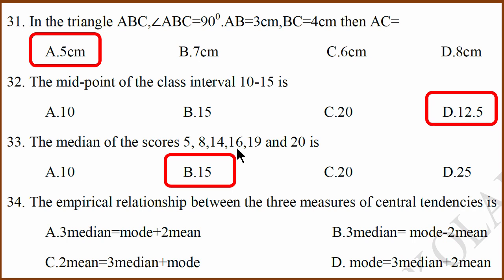Empirical relationship between three measures of tendencies, standard question. The correct answer is A.